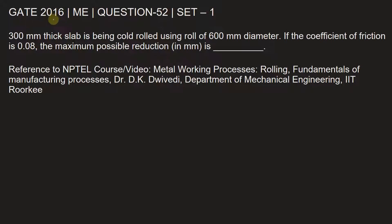This question is from GATE 2016 Mechanical Engineering paper, Set 1, Question Number 52. A 300 mm thick slab is being cold rolled using a roll of 600 mm diameter. If the coefficient of friction is 0.08, the maximum possible reduction in millimeters is ___.